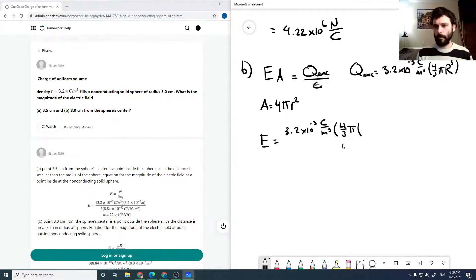Our E field is 3.2 times 10 to the minus 3 coulombs per meter cubed, times four-thirds pi times 0.05 meters cubed, over epsilon naught times 4 pi times 0.08 meters squared. The capital R is 0.05 meters, the radius of our sphere, and the little r is 0.08 meters, the radius of our enclosing volume.